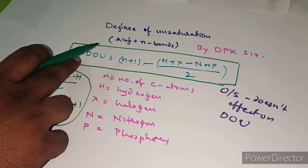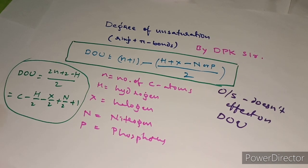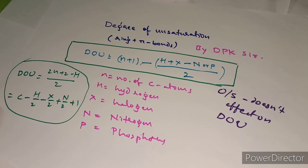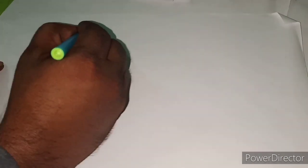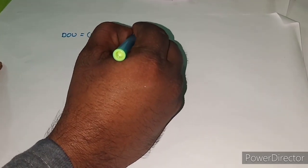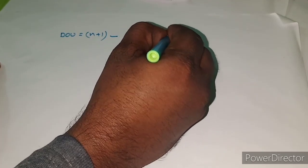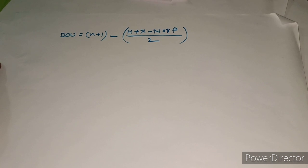Now let us use this formula to calculate the degree of unsaturation and see what conclusions we can make from it. Please take a pen and paper, note everything in detail, and do practice. The formula is: DOU = (number of carbon atoms + 1 − (number of hydrogens + halogens − nitrogen or phosphorus)) / 2.